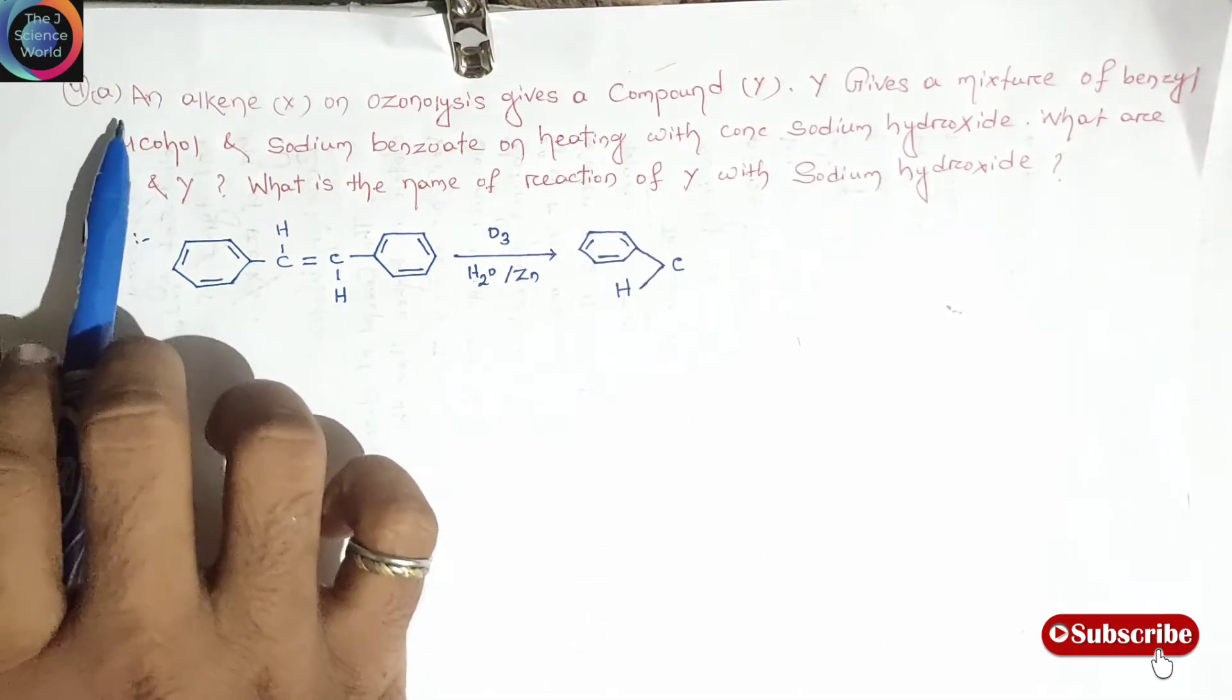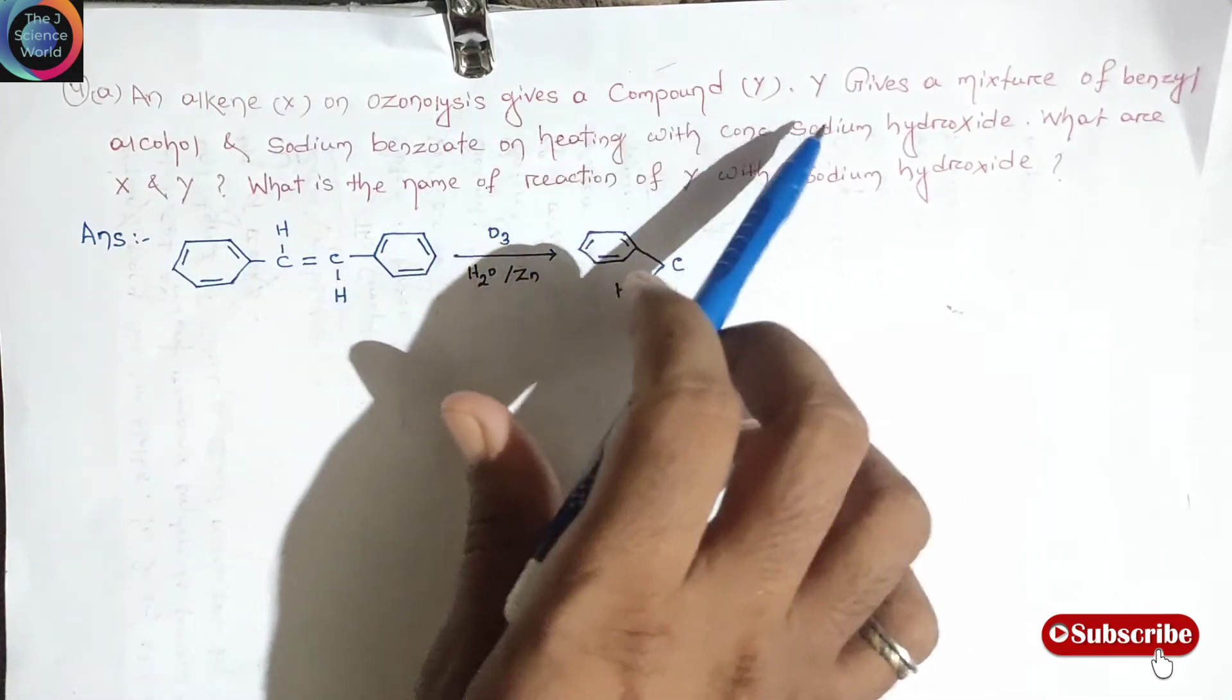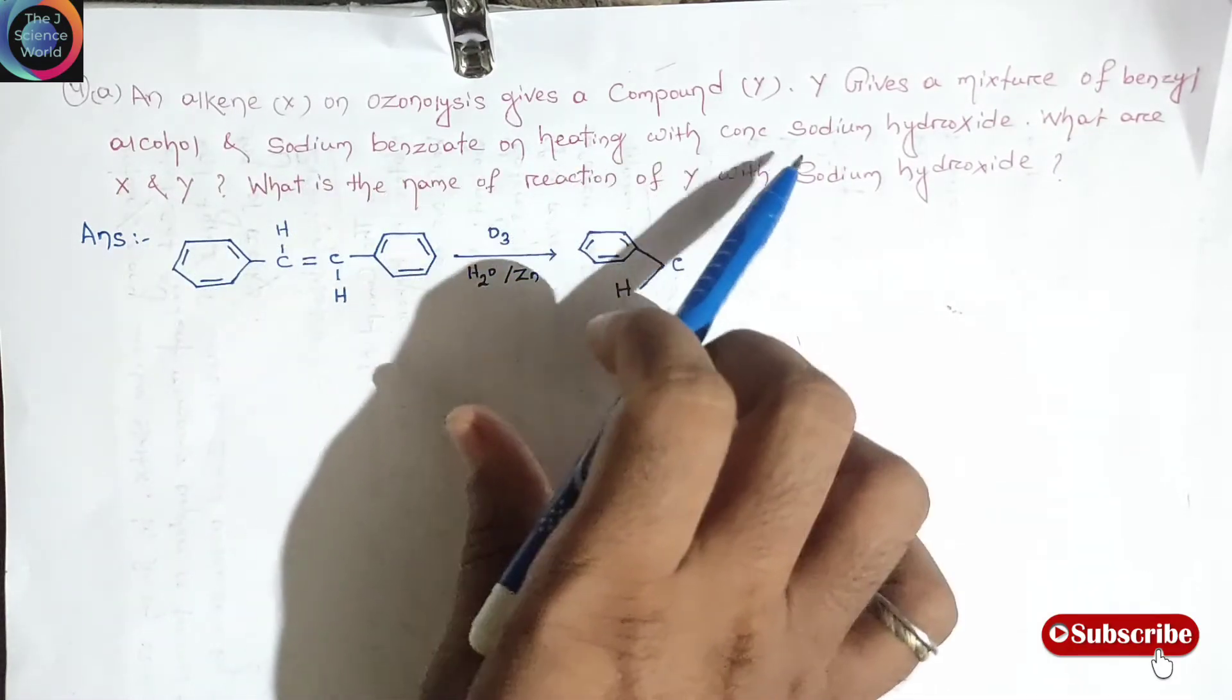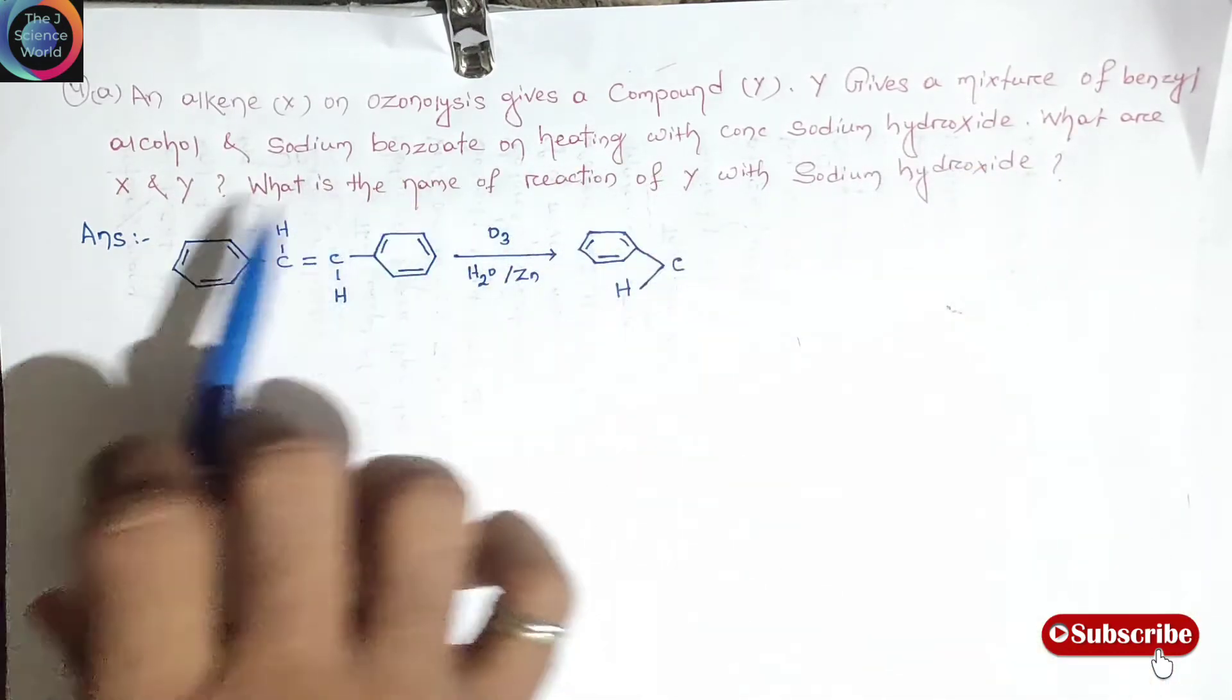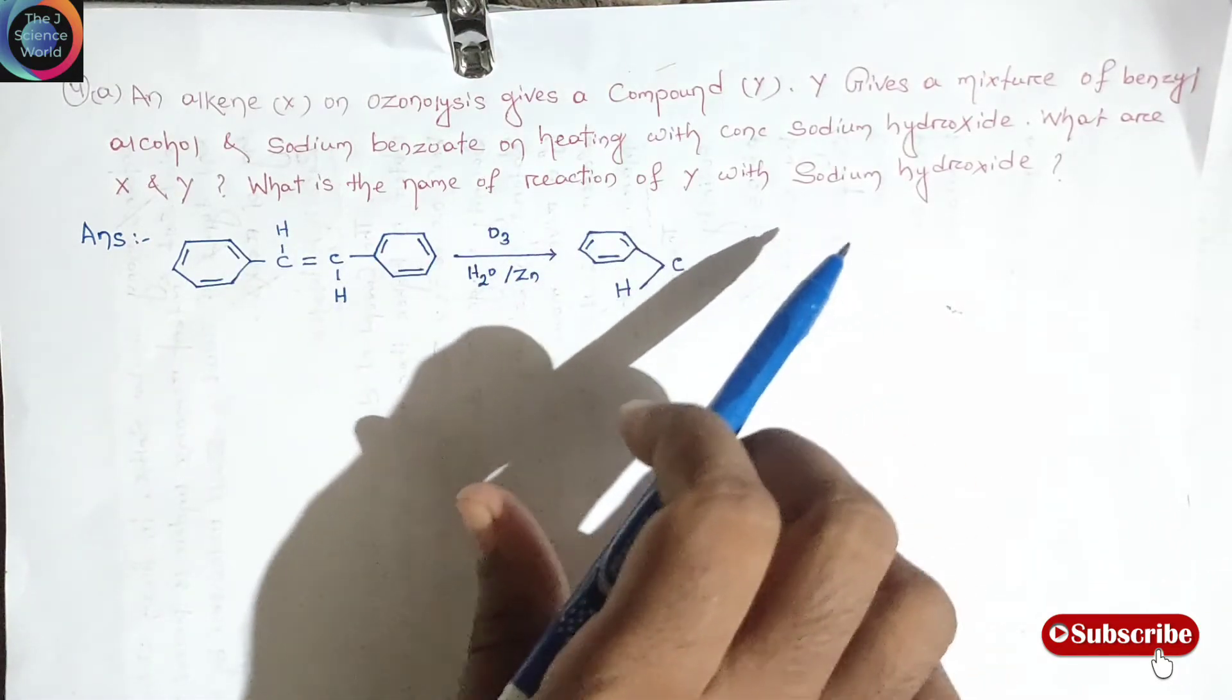This is question number 4a. An alkene X on ozonolysis gives a compound Y. Y gives a mixture of benzyl alcohol and sodium benzoate on heating with concentrated sodium hydroxide. What are the X and Y? What is the name of reaction of Y with sodium hydroxide?